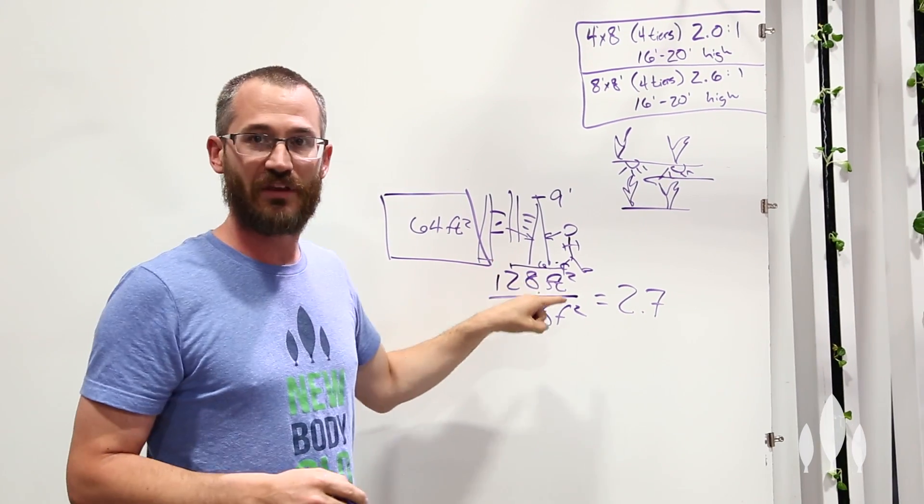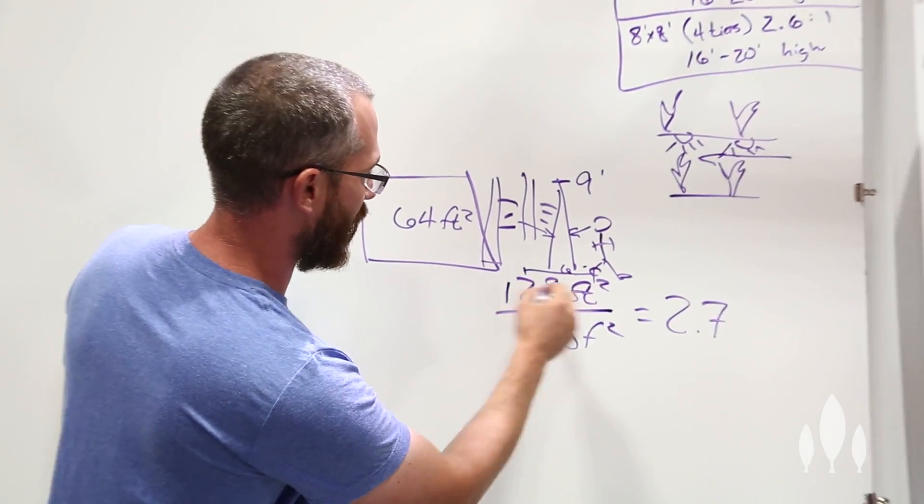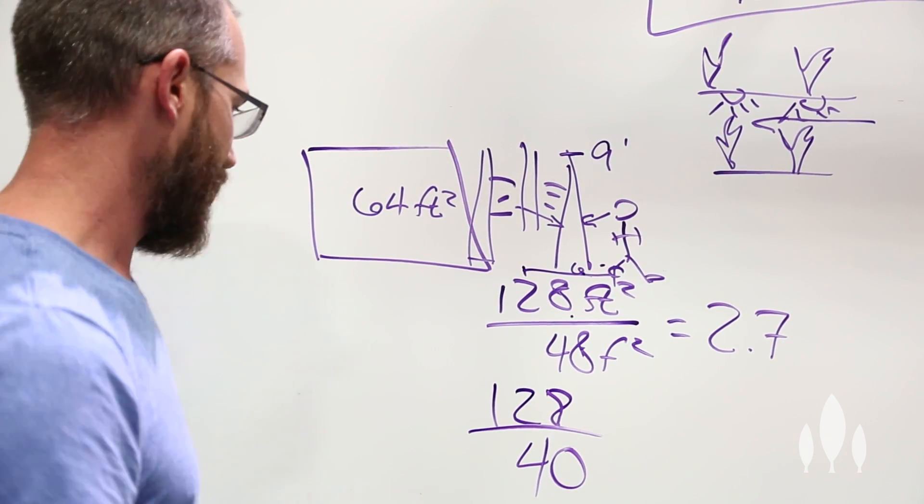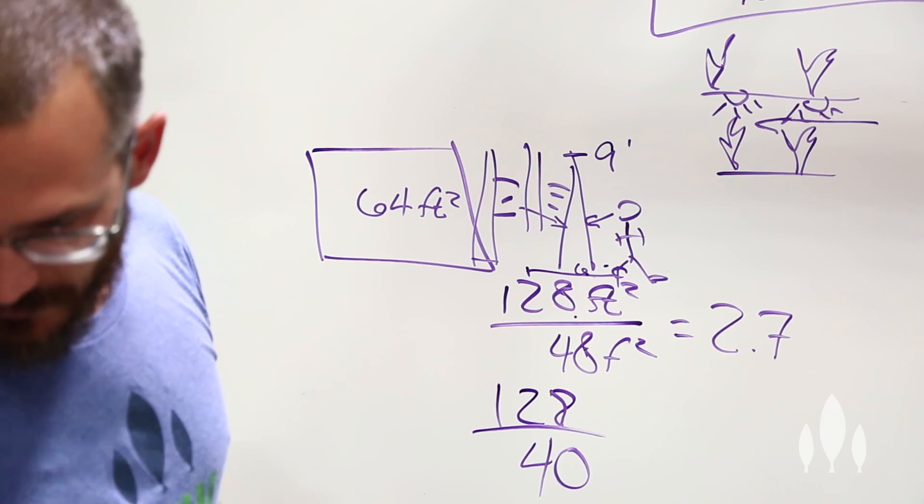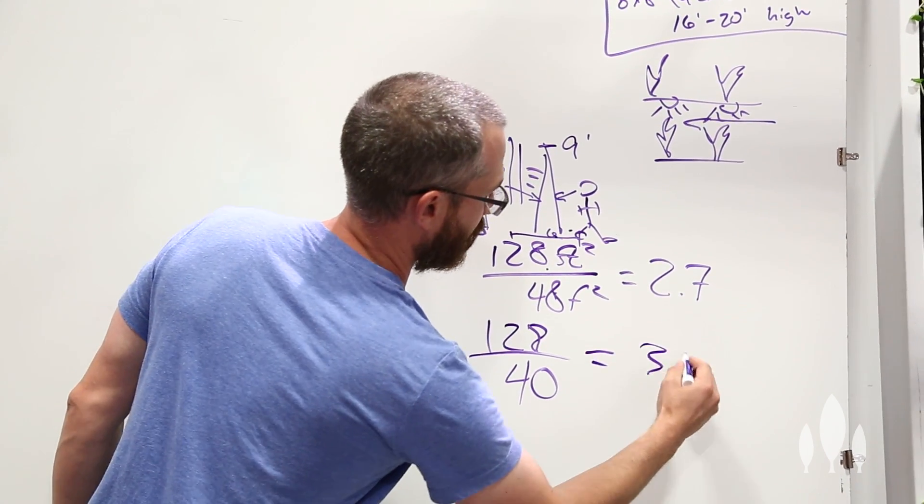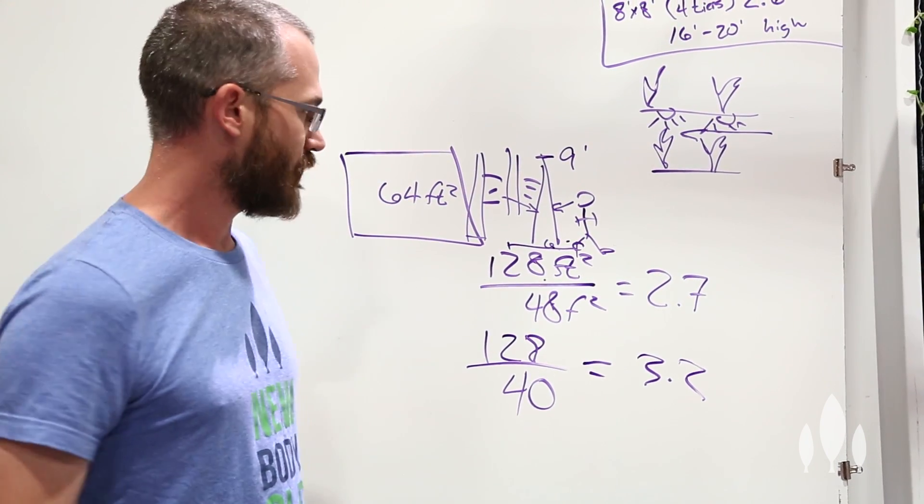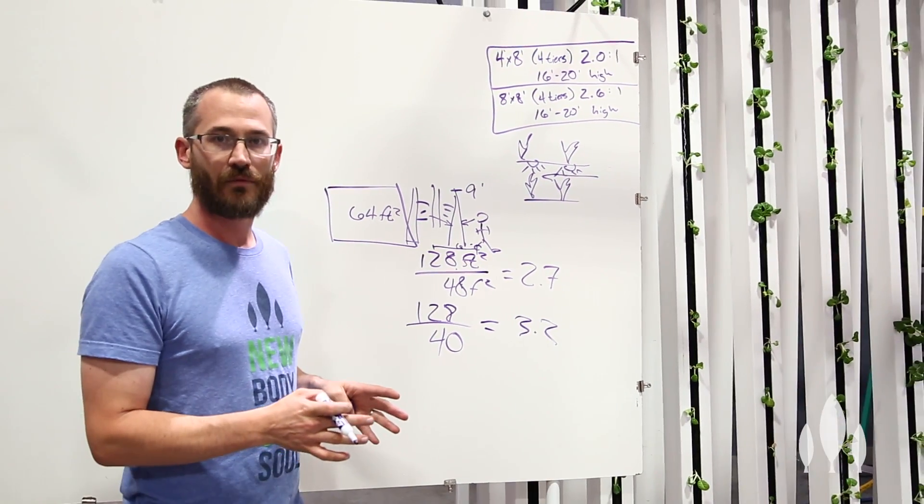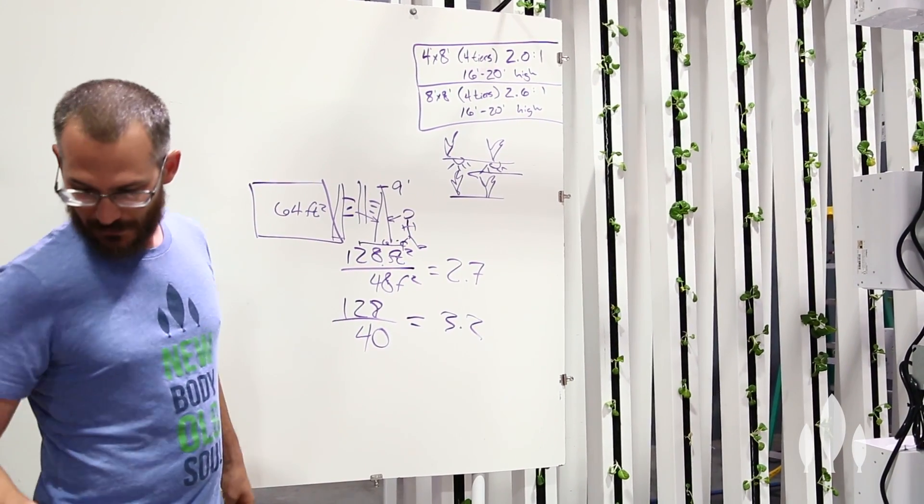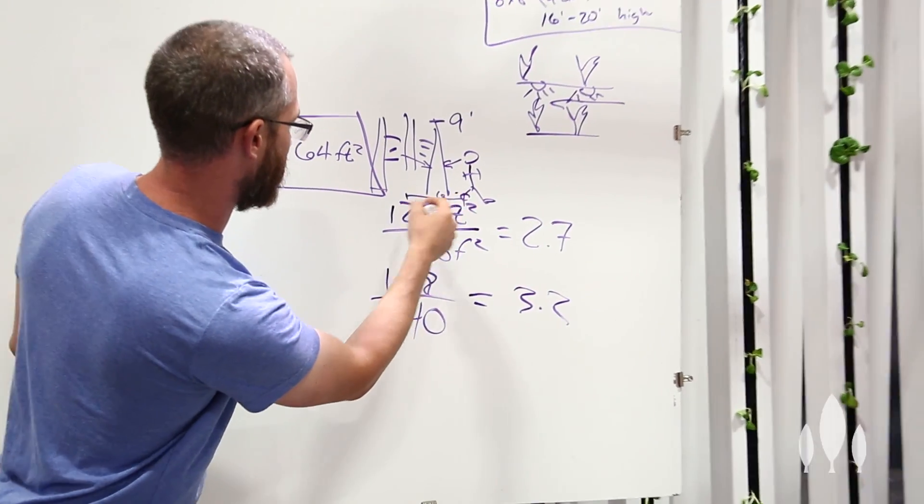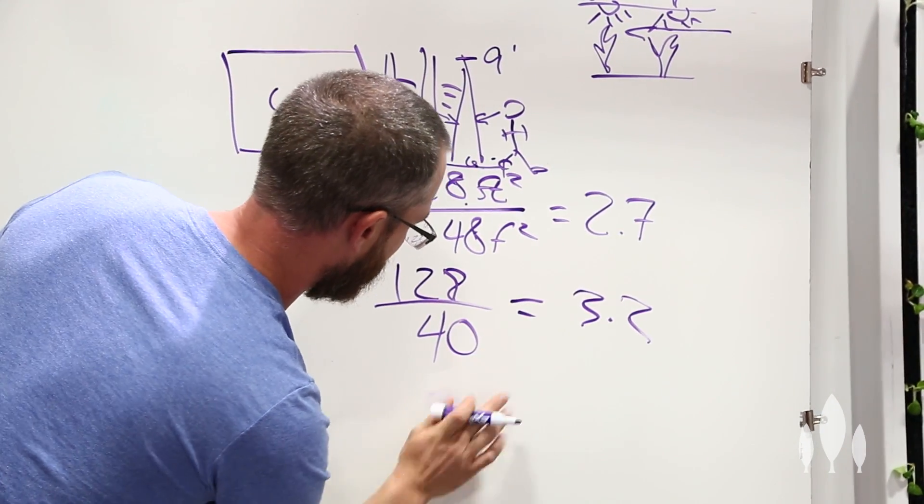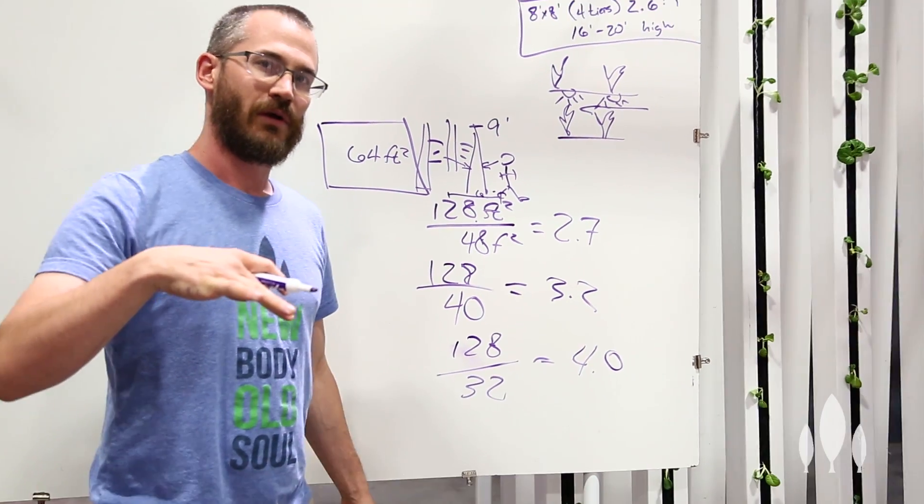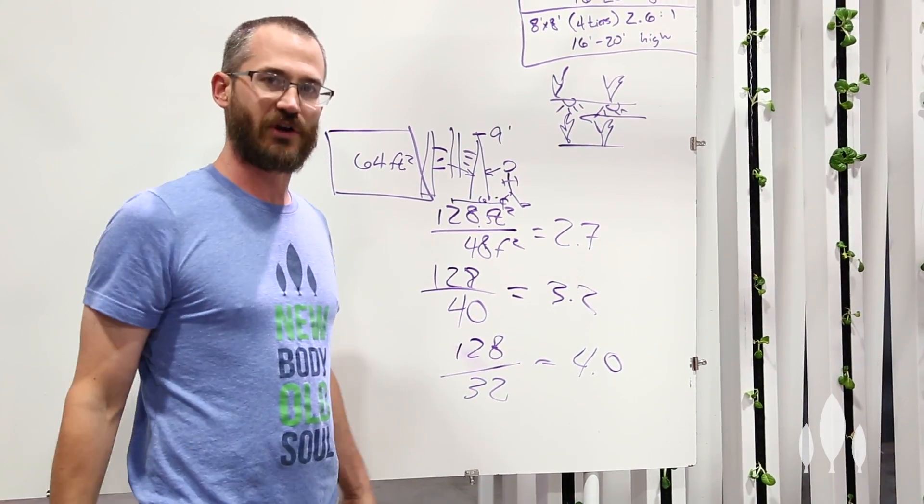So if we go tighter, say we go down to five feet, all of a sudden we're talking about 128 square feet over 40, that's a little over three, 3.2. So if we tighten it up by one foot, which we can easily do, all of a sudden we're in the threes. That's an insane ratio. If we tighten it up further, if we make our aisle widths two feet, so we've got a two foot wide rack, two feet in the middle, all of a sudden we're up to 4.0. So 128 over 32, 4.0. We're quadruple the amount of productive space as we are square footage in our warehouse or indoor growing facility.